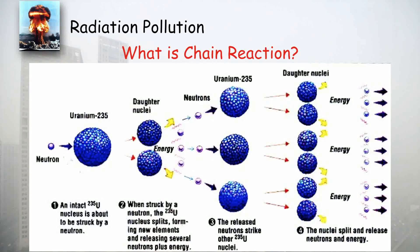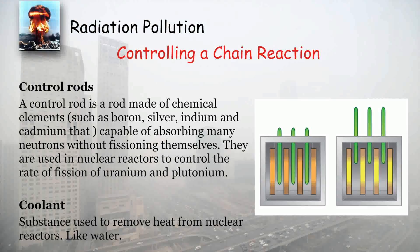To control chain reactions, we use control rods. Control rods are generally made up of boron, silver, indium, or cadmium — all of which have the property of absorbing neutrons. If neutrons are absorbed by these control rods, the reaction stops. As the reaction proceeds, a large amount of heat is also generated, which is removed using a coolant — generally water.